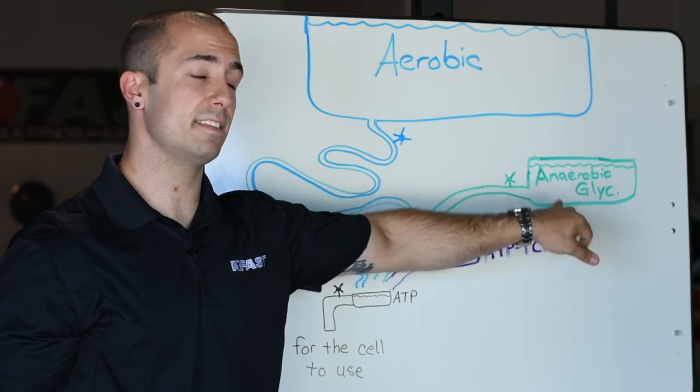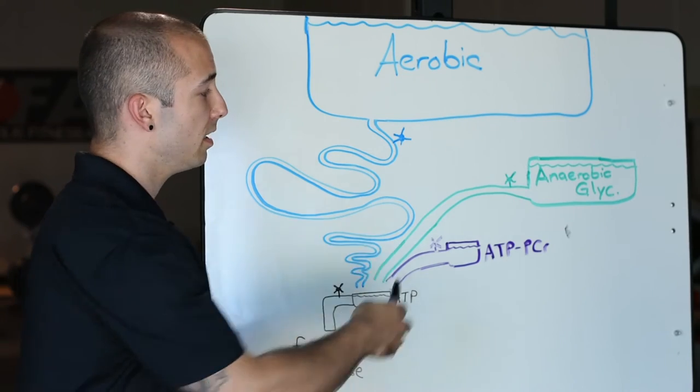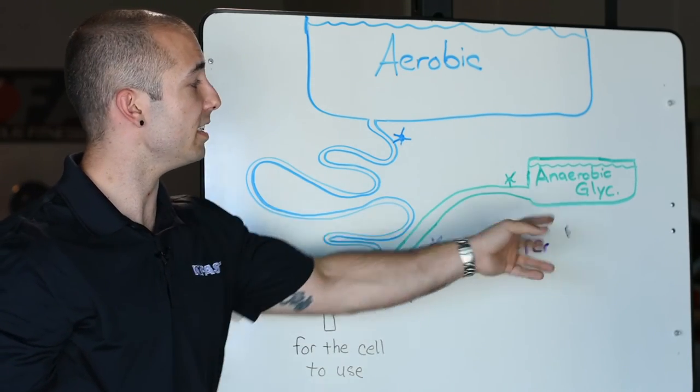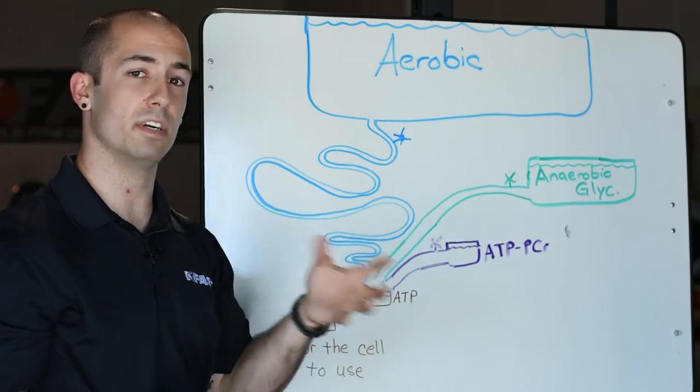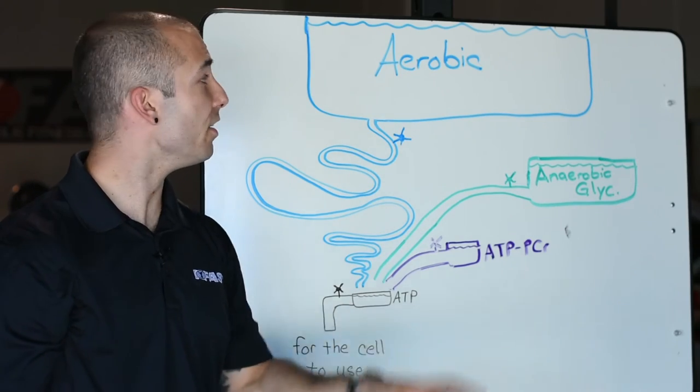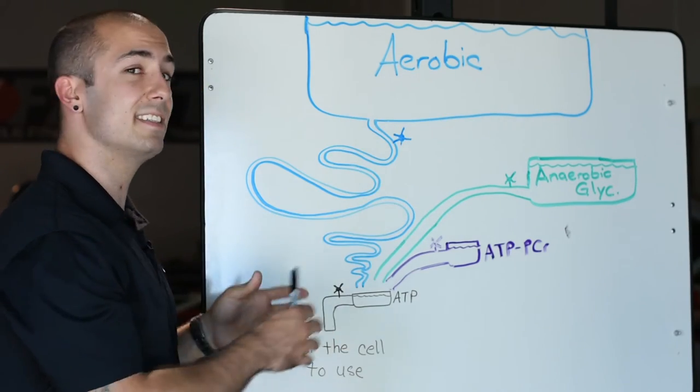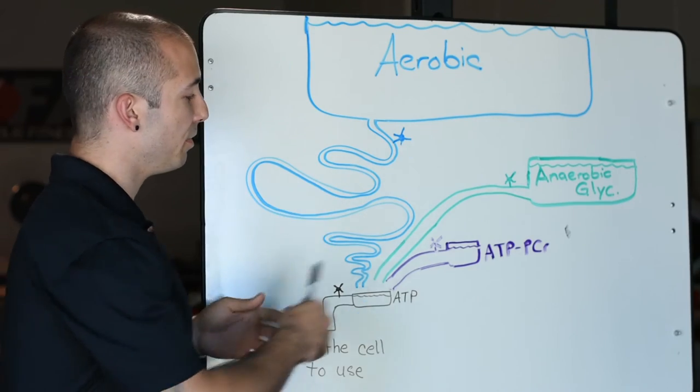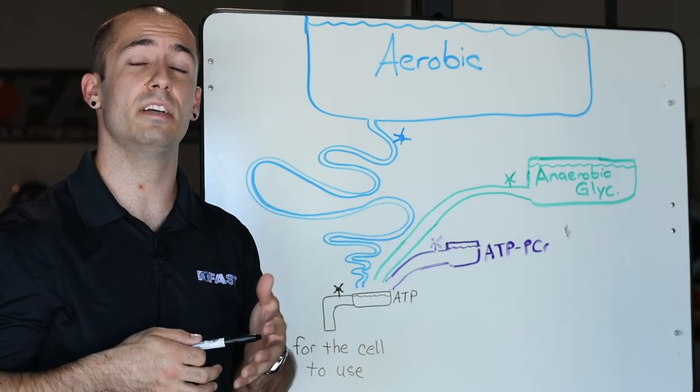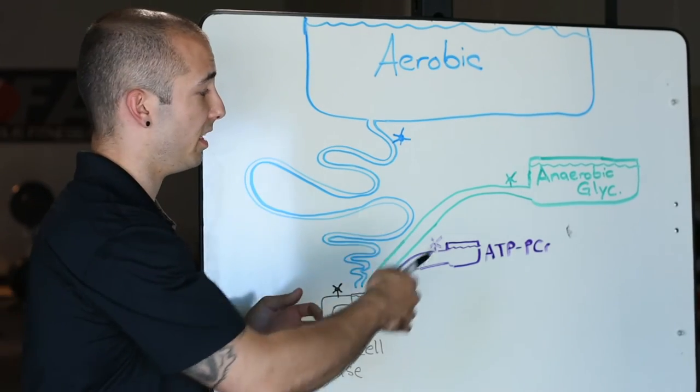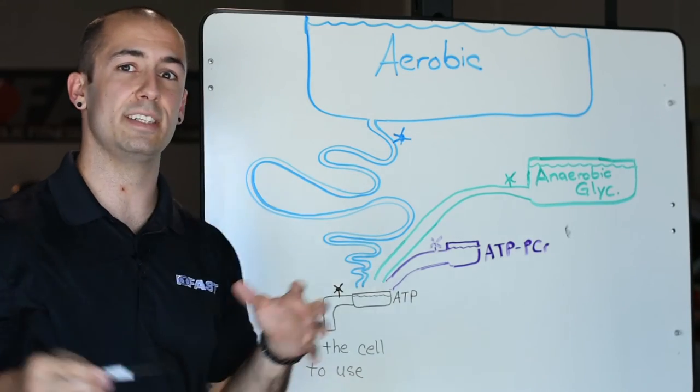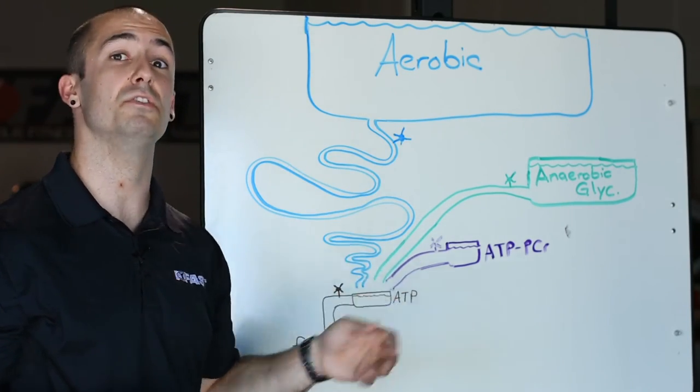Versus our anaerobic glycolytic system, a little bit smaller diameter of a pipe, but a little bit longer of a process to get it there. So again, we see this moderate capacity and a moderate power, i.e. the size of the pipe, to get us some ATP that's usable. And lastly, our aerobic system. If you look at the size of the pipe, it's really small around compared to the other two, which means we don't have a ton of power here, so it's not giving us ATP very quickly relative to the other two. And the pipe is really long, because there's so many steps in this process before we can get ATP that's usable.